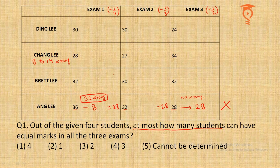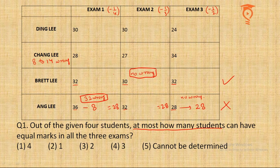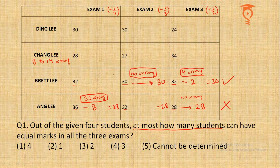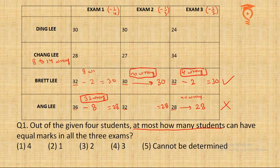For Bretley, it looks directly possible because all three attempt numbers are close. The minimum questions attempted by Bretley is 30, in Exam 2. If he does no wrong answers there, his score is 30. To get a score of 30 in Exam 3, he needs to subtract 2 marks, requiring 4 wrong answers — completely possible. For Exam 1, he also needs to subtract 2 marks, requiring 8 wrong answers — also completely possible. Bretley passes.